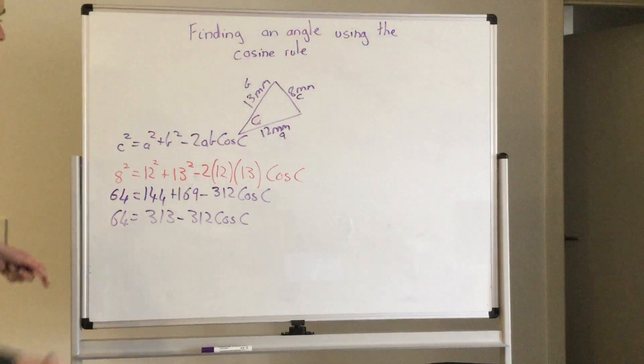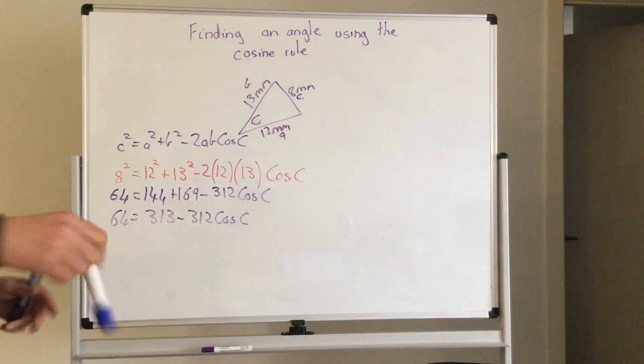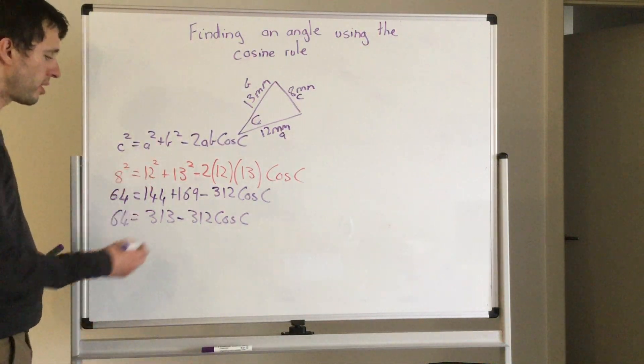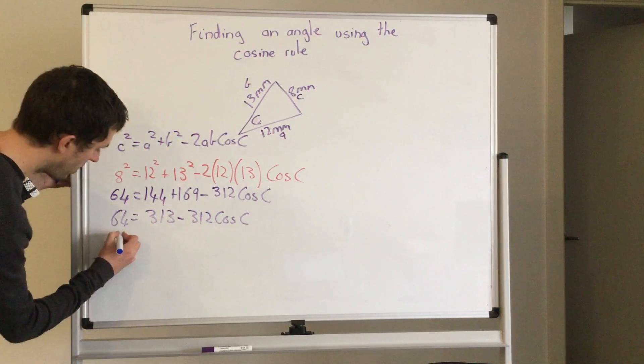Now this is plussing on this side, so I'm going to be doing the opposite. The opposite is take away. So I'm going to take 313 from both sides. So I'll take it from here.